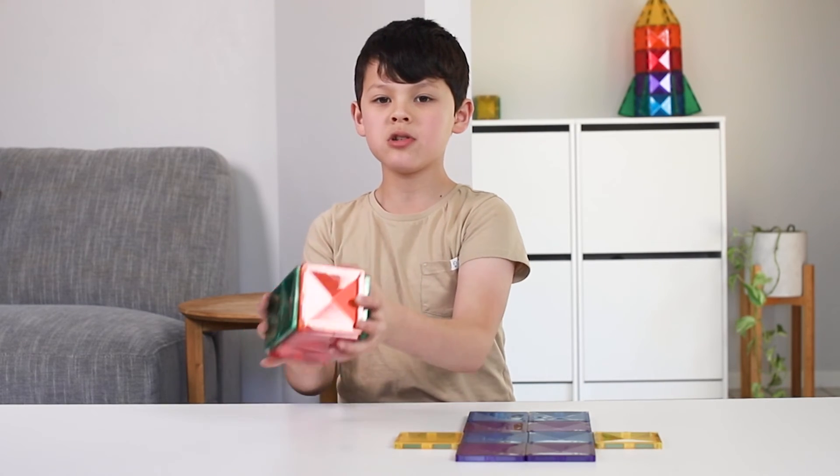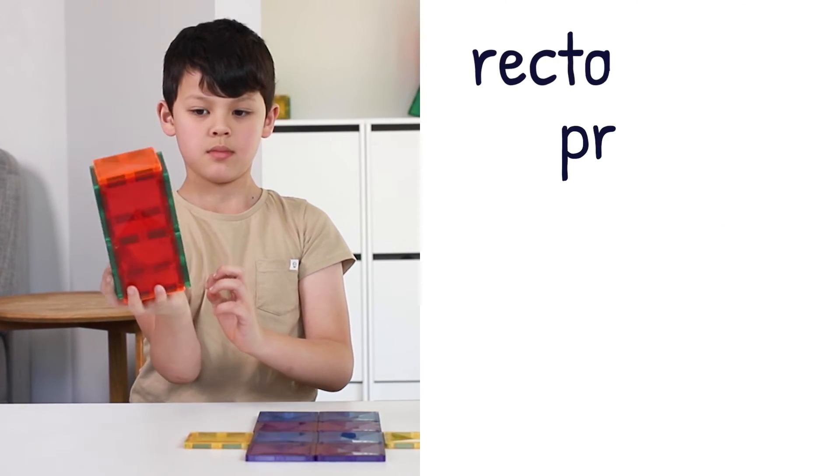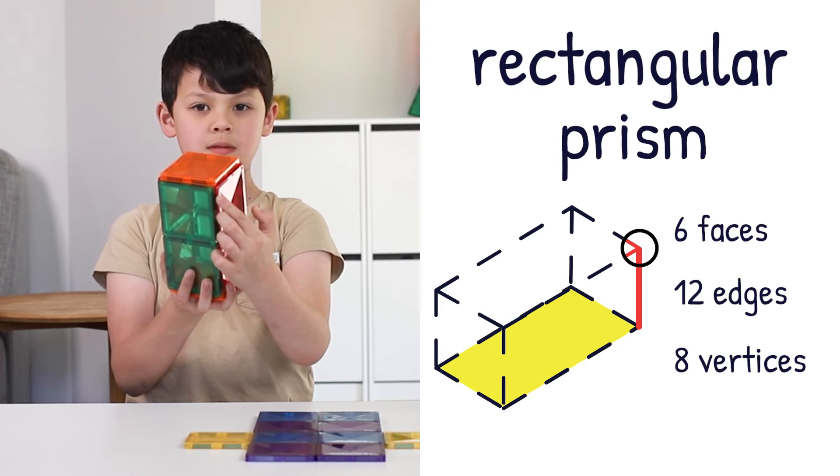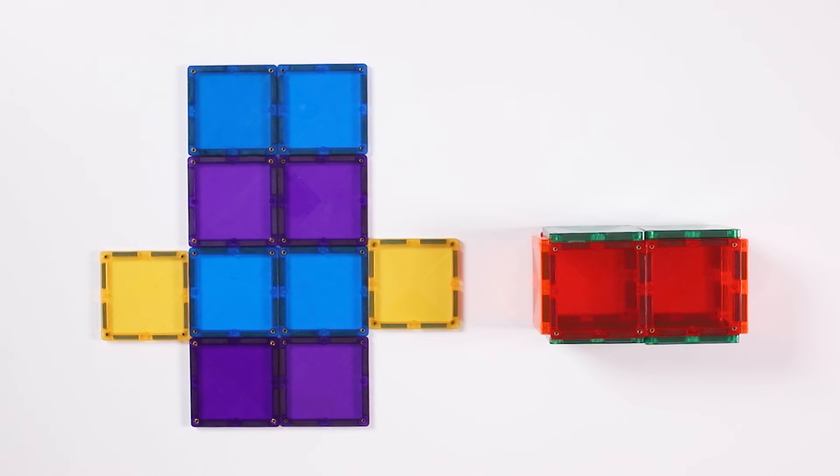This is a rectangular prism. It has 6 faces, 12 edges, and 8 vertices. This is the net for the rectangular prism. It has 6 faces. Let's fold it up.